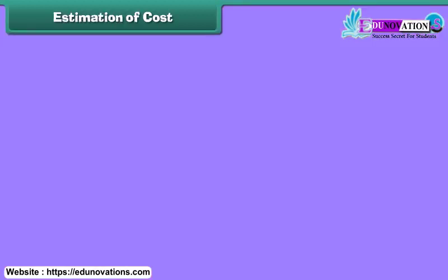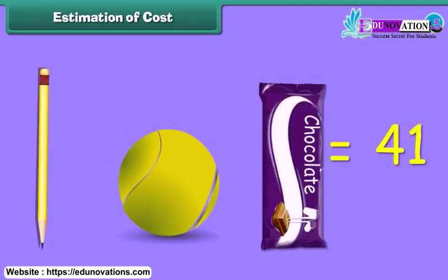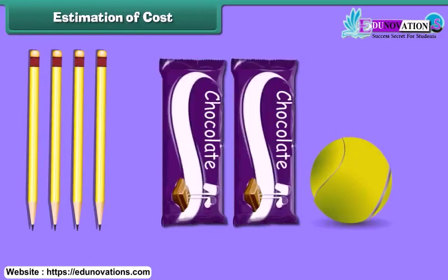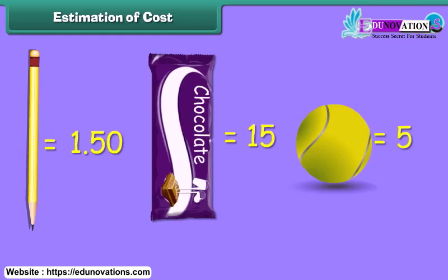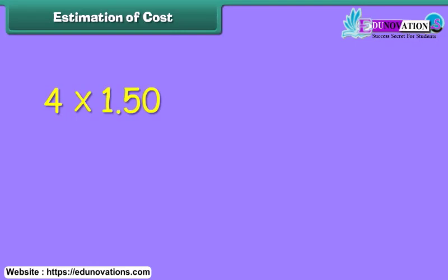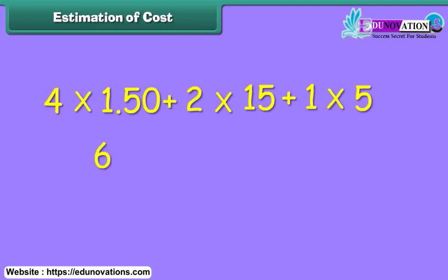Estimation of cost means calculating the total cost of different items. What will be the total cost of four pencils, two chocolates, and one tennis ball? The unit cost of a pencil is 1 rupee 50 paisa, unit cost of chocolate is rupees 15, and tennis ball is rupees 5. The total cost is equal to 4 × 1.50 plus 2 × 15 plus 1 × 5, which is equal to 6 plus 30 plus 5 rupees, amounting to rupees 41. Thus, this is the estimated cost.